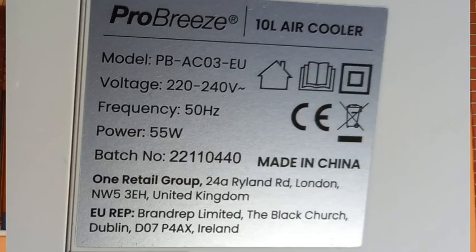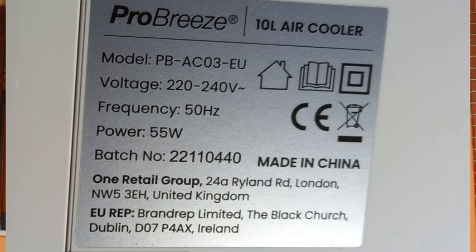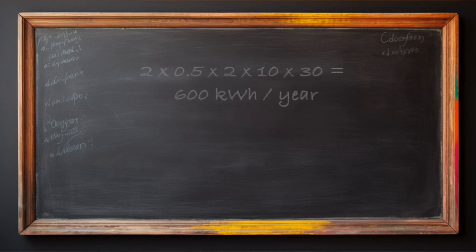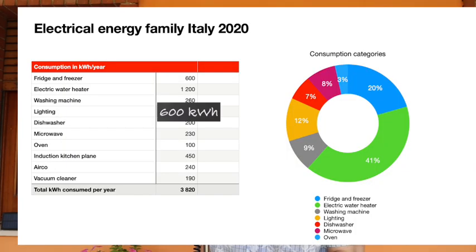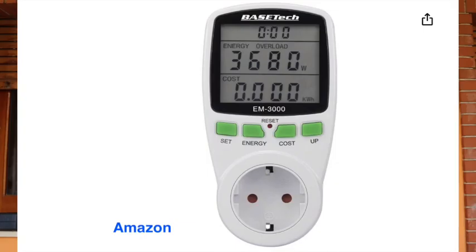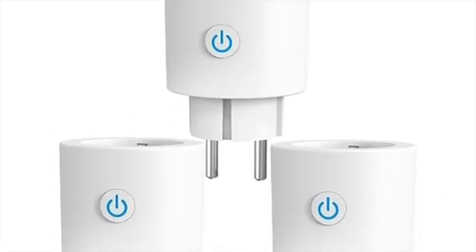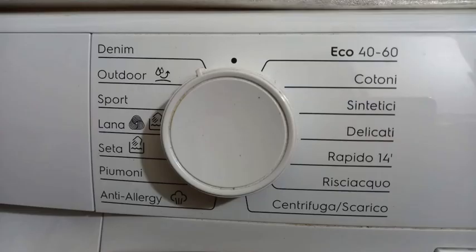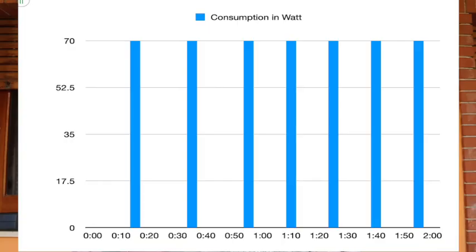How do you do that? Estimate values of a device by multiplying consumption in watts with hours per day and days per year. For example, if a device consumes 500 watts and you use it 2 hours a day and 10 months a year, then you will consume 600 kilowatt hours per year. Correct this in your list. Buy one of the meters in the description to analyze the consumption of devices during a day or a week — that is necessary with variable consumption, like a washing machine that has different programs or a refrigerator that has different running times.